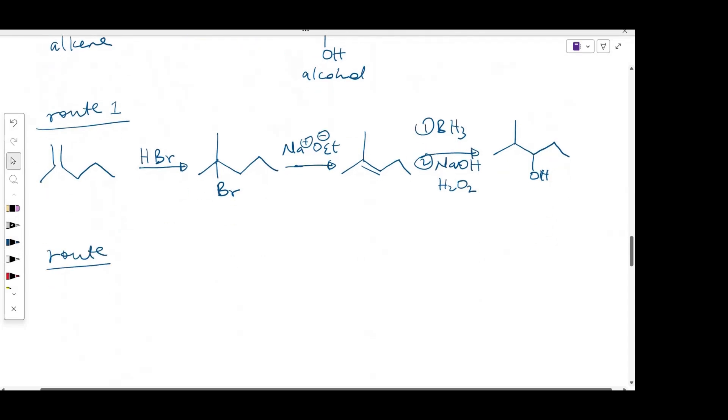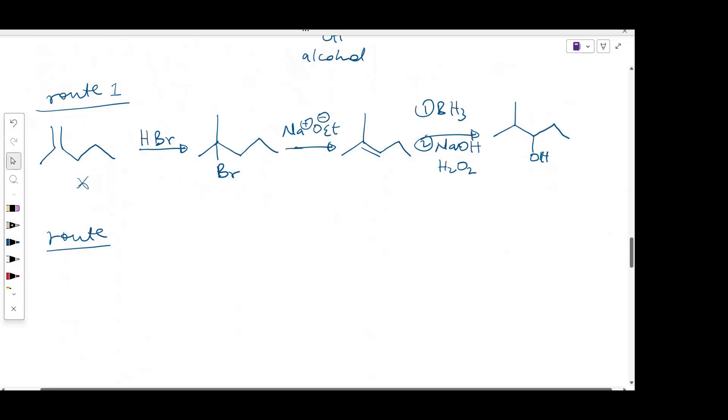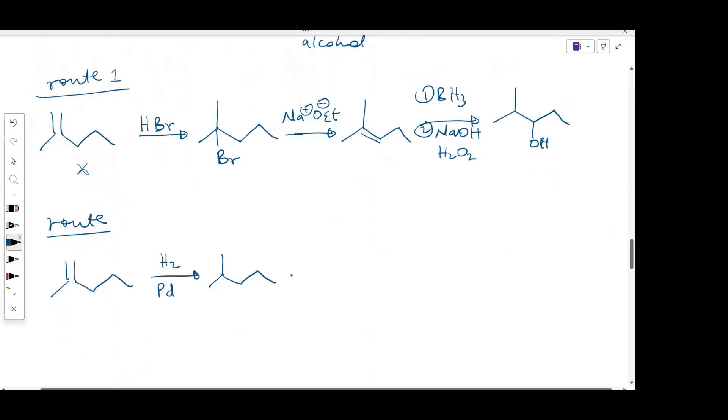The strategy could be that I may have to convert this to alkane and convert the alkane to an alkyl halide using radical bromination. And then from there, I can complete this synthesis. So let's try that. If I react this with hydrogen and a metal catalyst, say palladium, that's going to convert the alkene to this alkane.